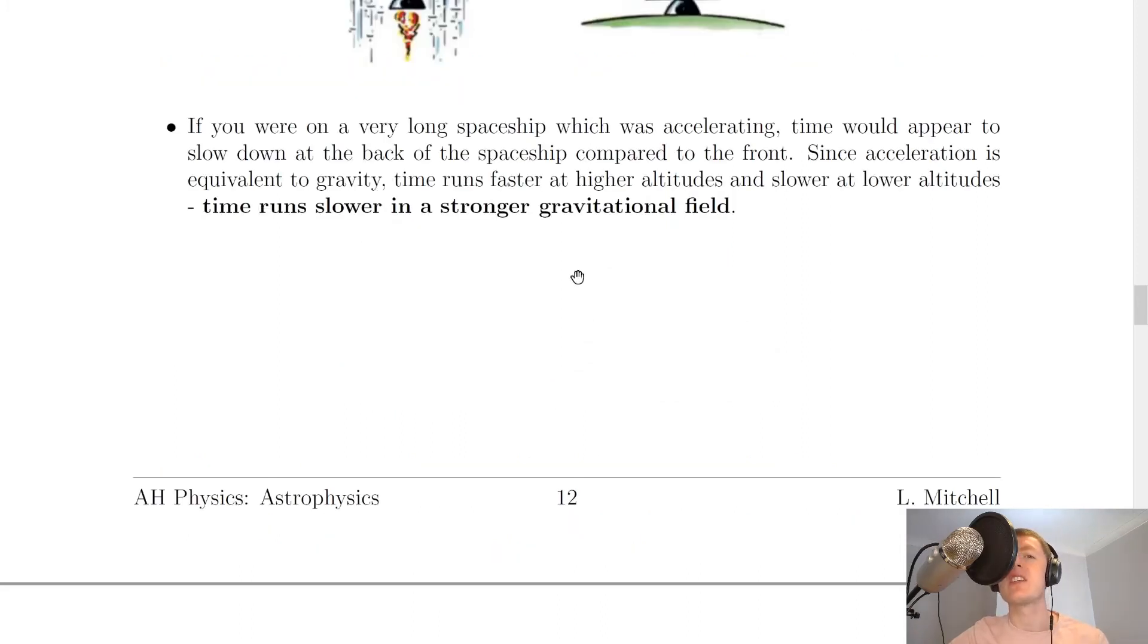So touching on this idea of gravity affecting time and space, it says that if you were on a very long spaceship which was accelerating, time would appear to slow down at the back of the spaceship compared to the front. Since acceleration is equivalent to gravity, time runs faster at higher altitudes and slower at lower altitudes. Or another way of saying this is that time runs slower in a stronger gravitational field.